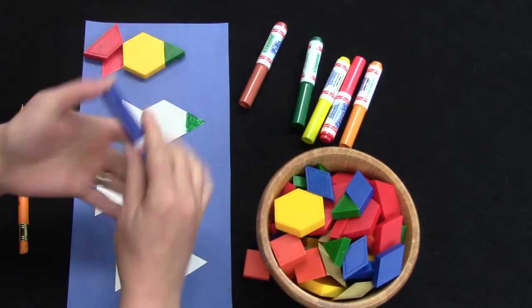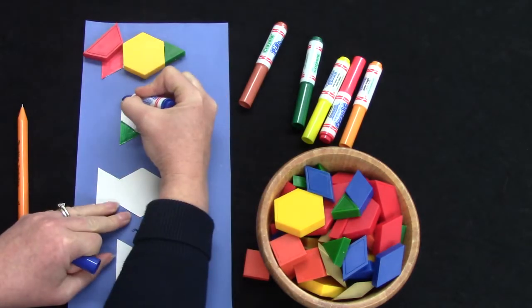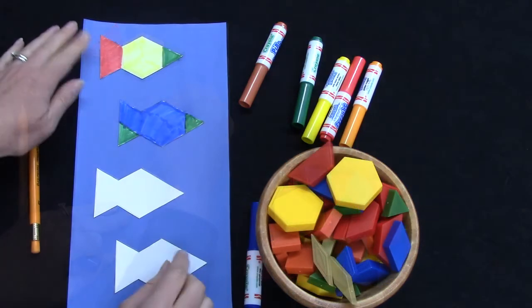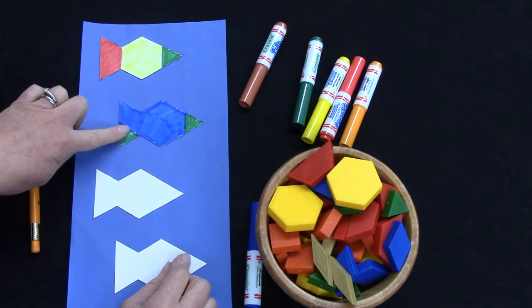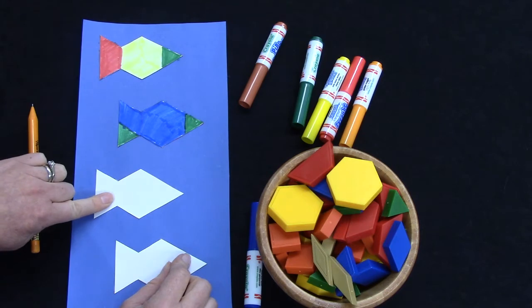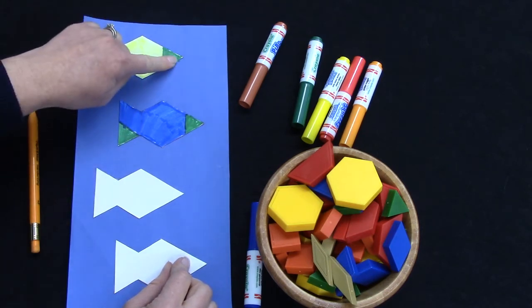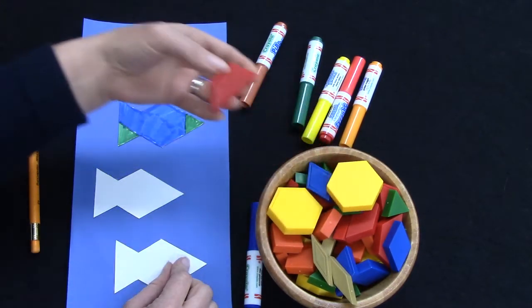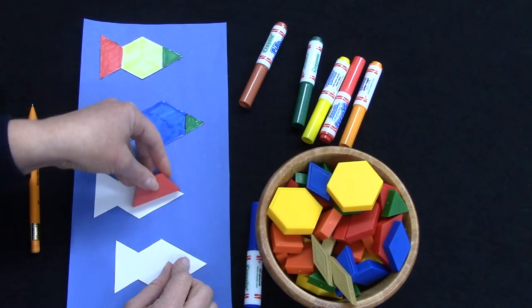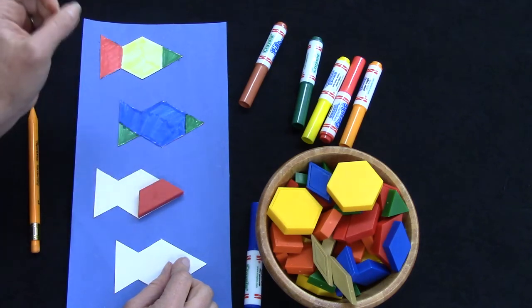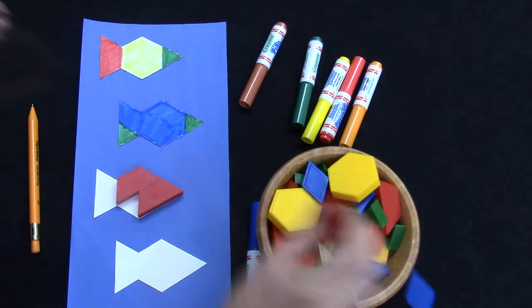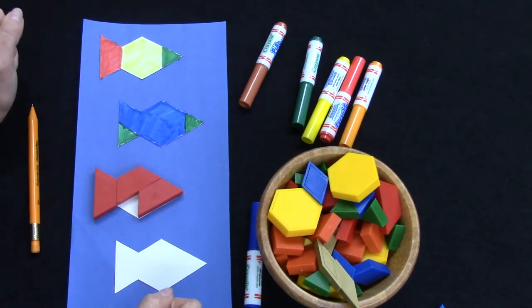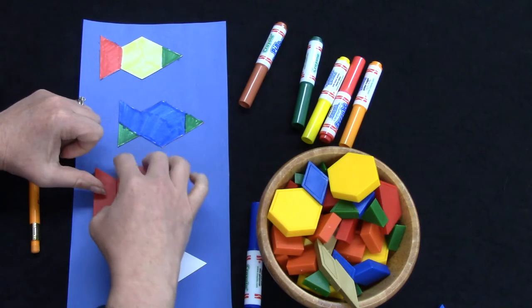I have designed two different fish and I'm going to try doing this one a different way. I have triangles on the tips of both of these fish and I think I'm going to see if I can use a trapezoid there this time. The red pattern blocks are trapezoids.